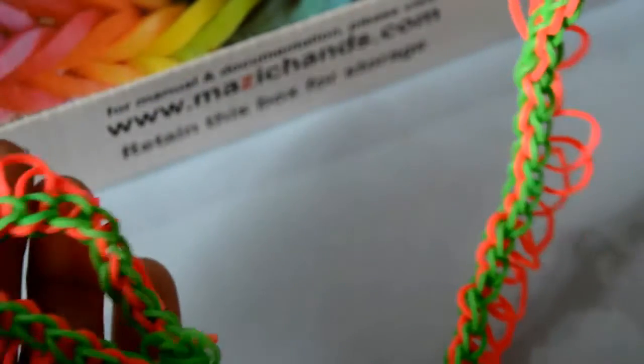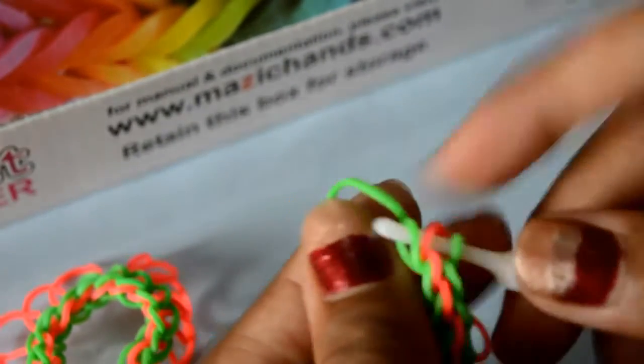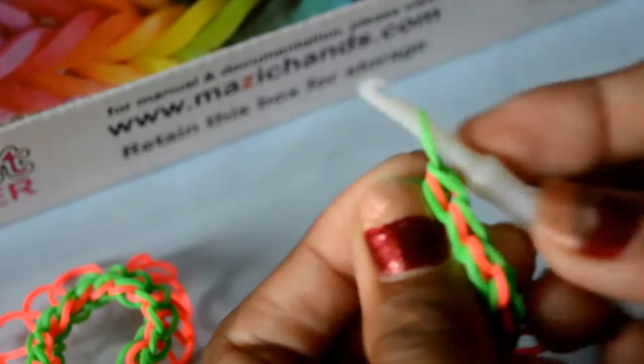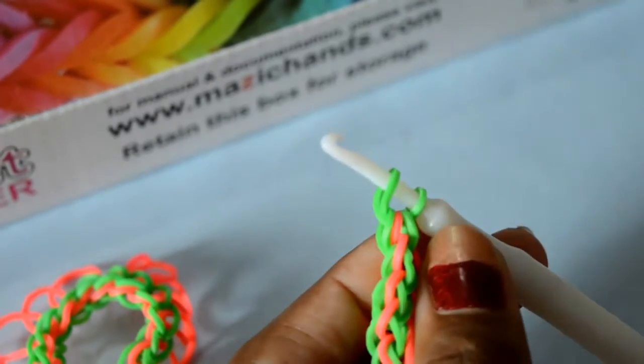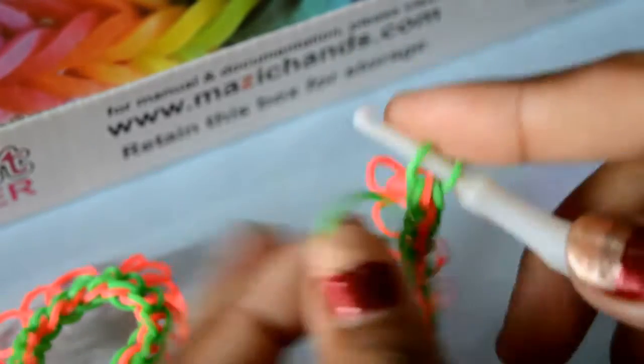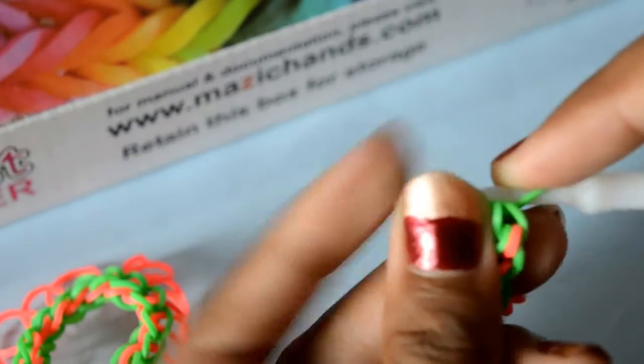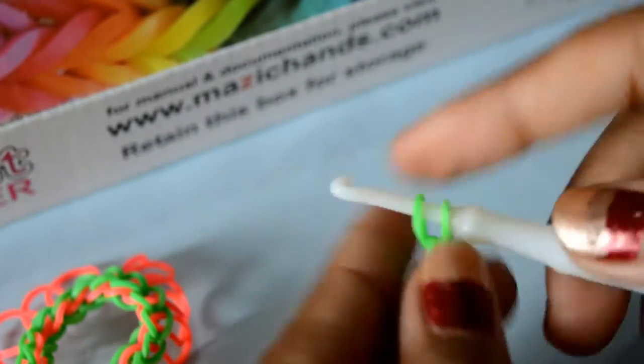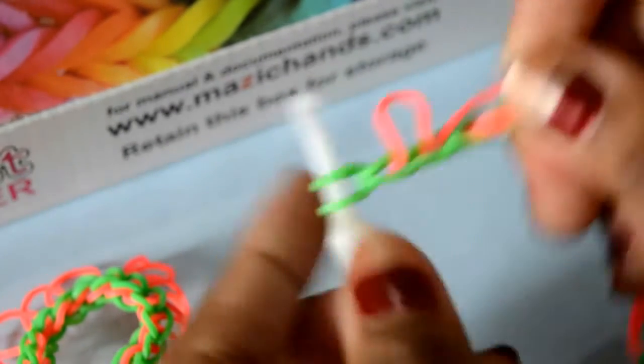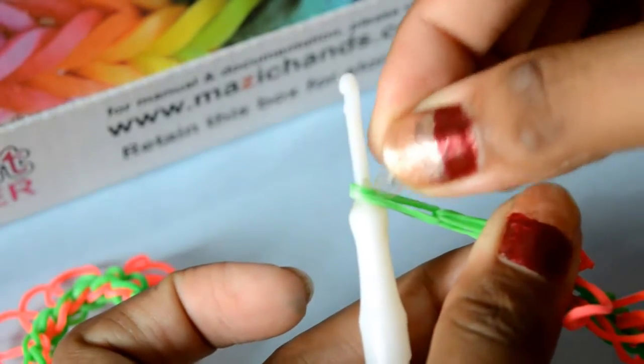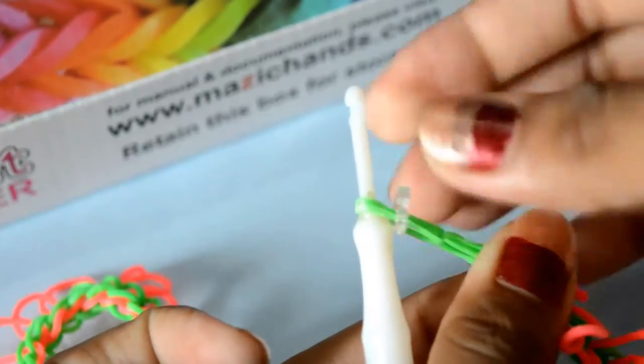All right, now it's enough now. Now you have a C clip. Add the C clip in this last rubber band like this. Remove the hook.